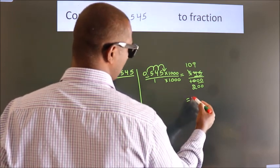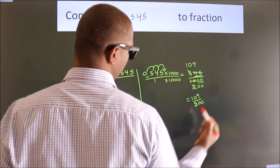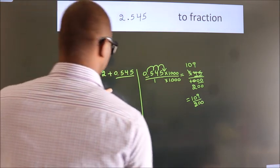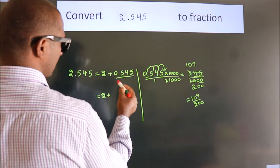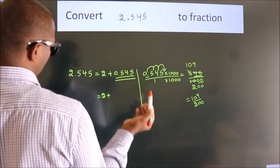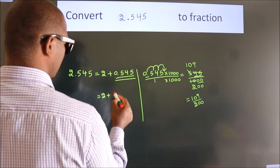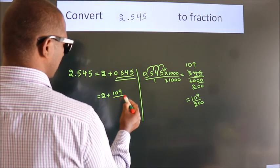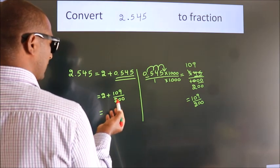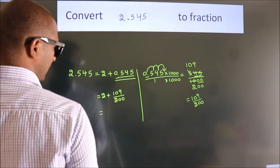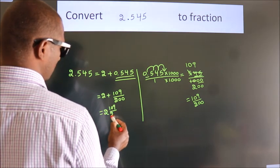So the fraction we got is 109 by 200. Now here, 2 plus in place of 0.545, now we write this fraction, 109 by 200. 2 plus 109 by 200 in mixed fraction is 2 and 109 by 200.